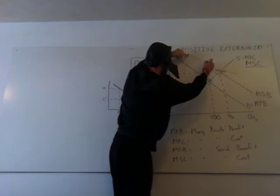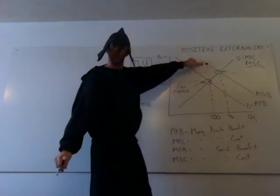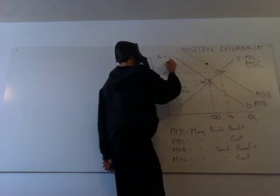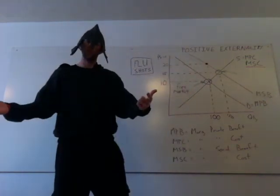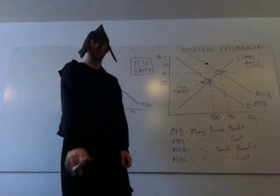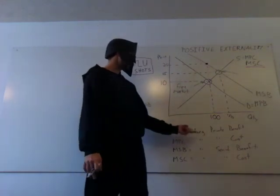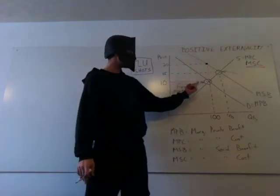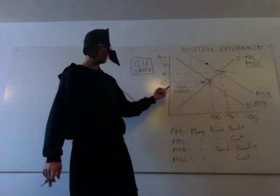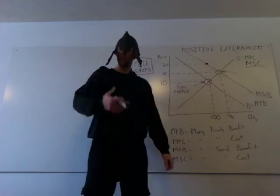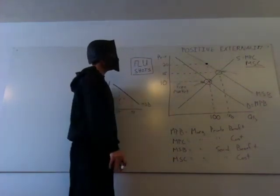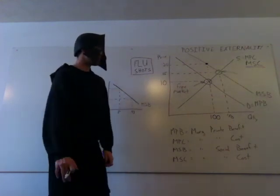Well, think about it now. We're supposed to produce more of a positive externality. Why? At the free market quantity, the costs are ten, but the social benefit's 20. Only if the benefit is greater than the cost, you should produce more.